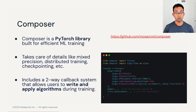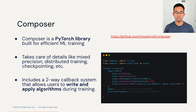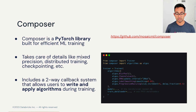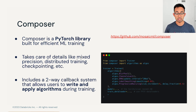The next component is our open source training library called Composer. Composer is built on top of PyTorch and makes it easy to train models — from diffusion models to LLMs to image models. It handles mixed precision training, distributed training, object store checkpointing, and all the things needed to train at scale in the cloud. It also comes with a callback system so you can write algorithms that occur at different stages of the training loop, such as after the forward pass or before the optimizer step. Internally at MosaicML, we use Composer for all our training runs.